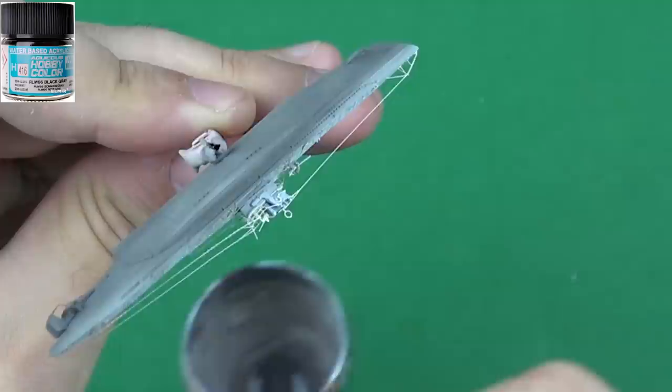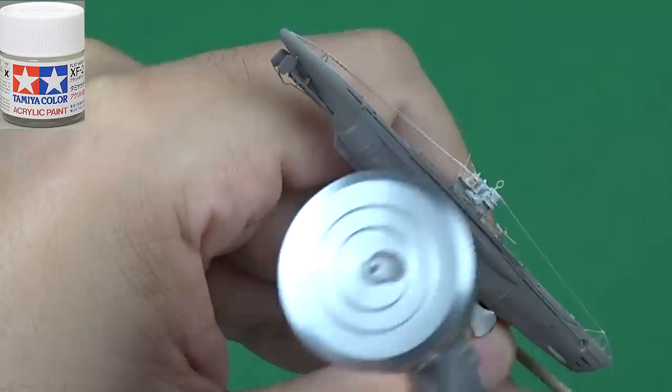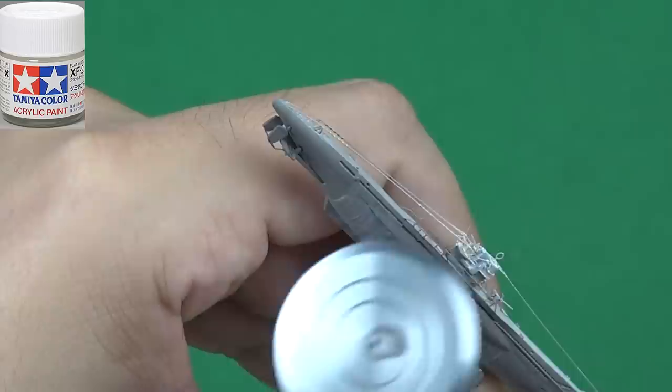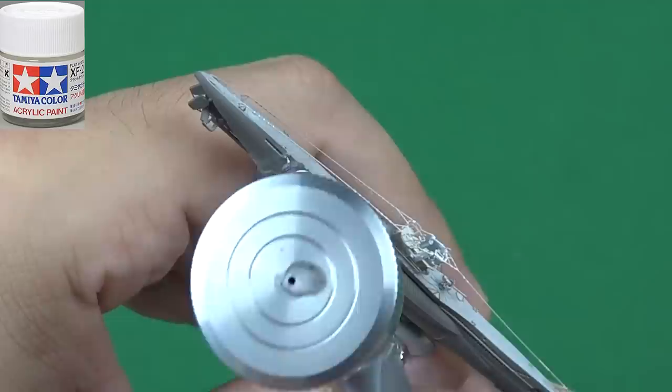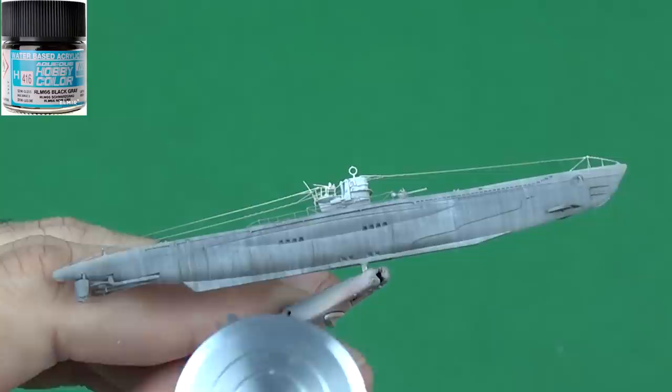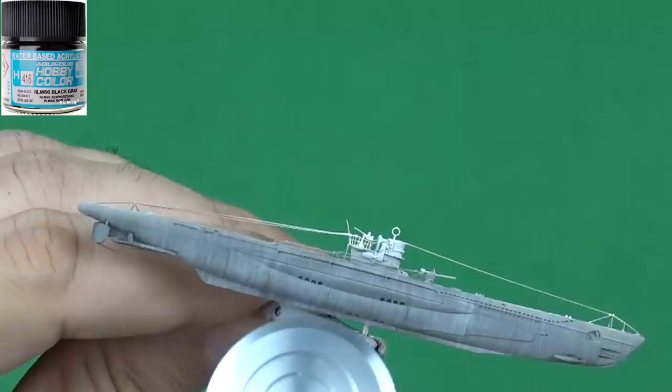As usual, I am applying the first weathering layer with white. And finally, I am applying highly diluted main color for completing the effect.